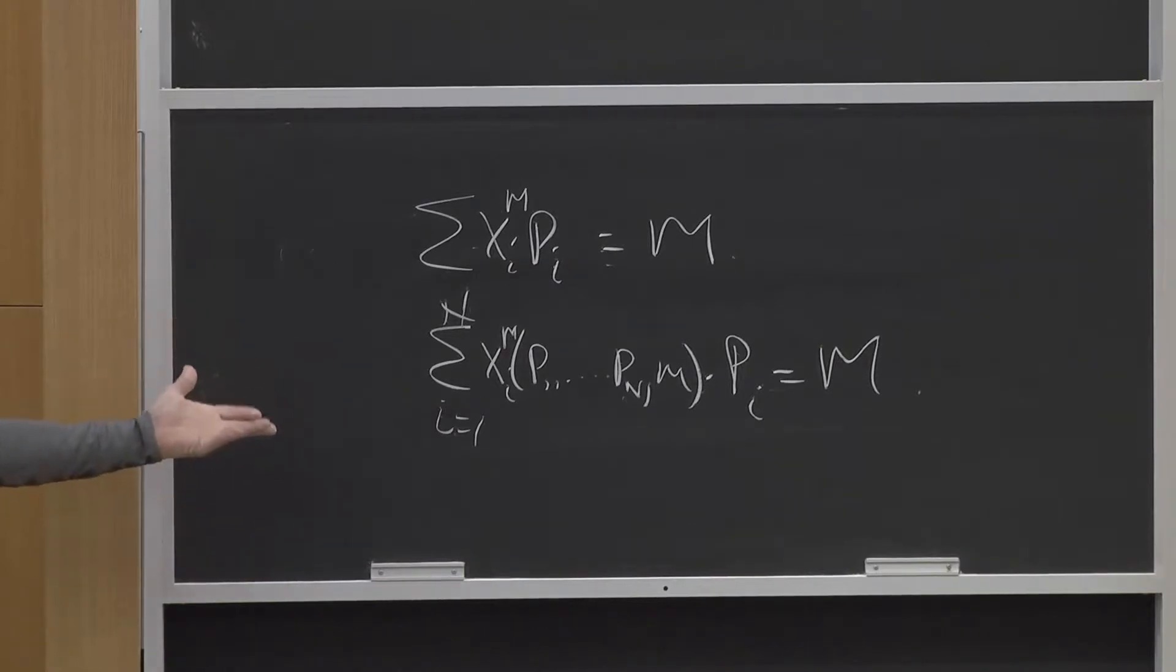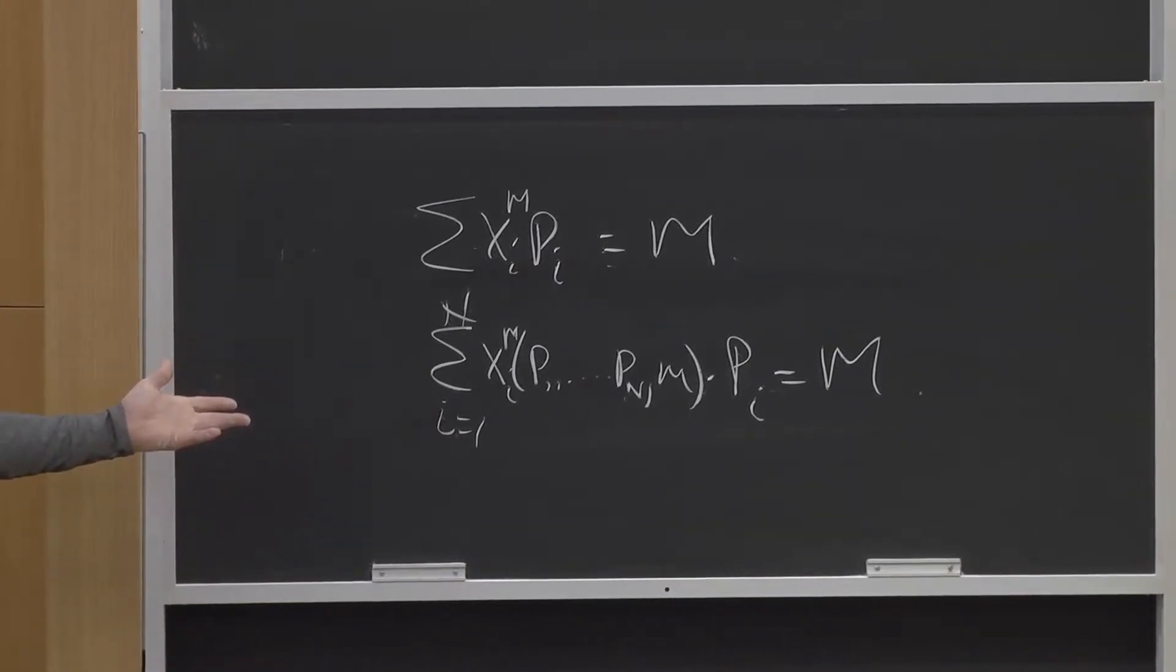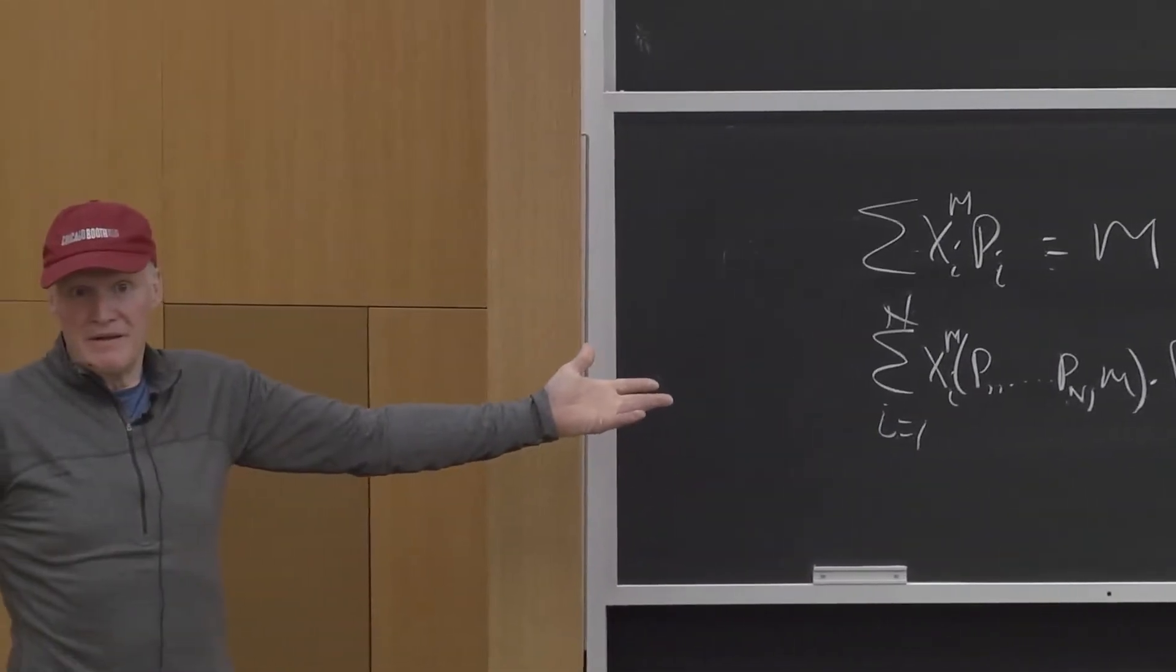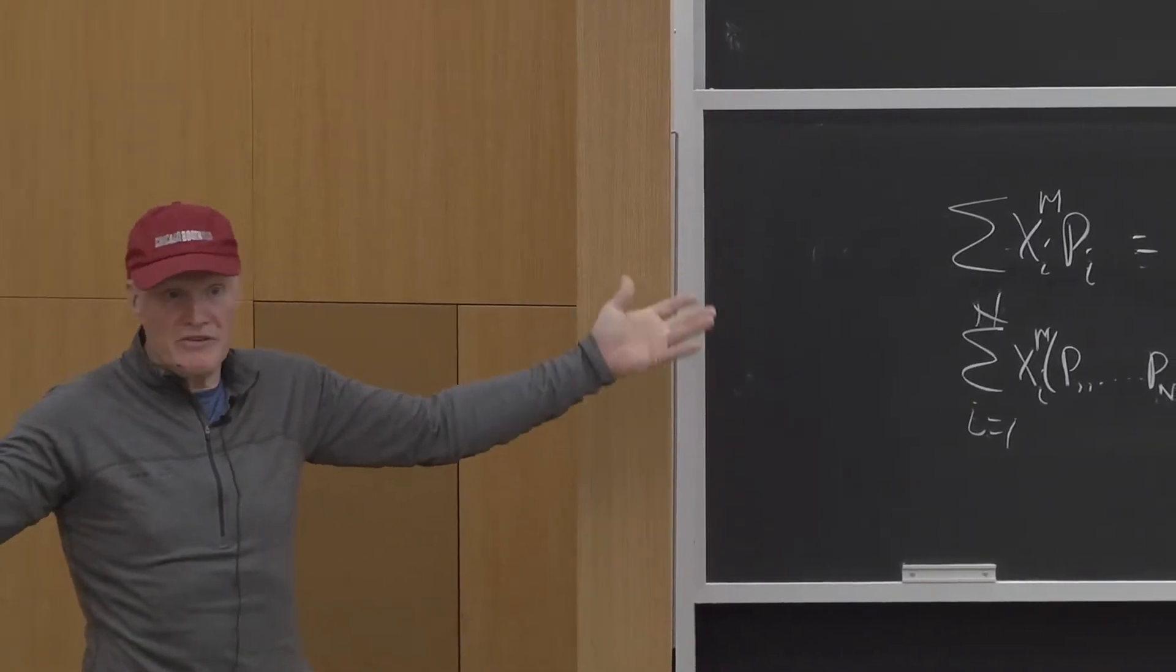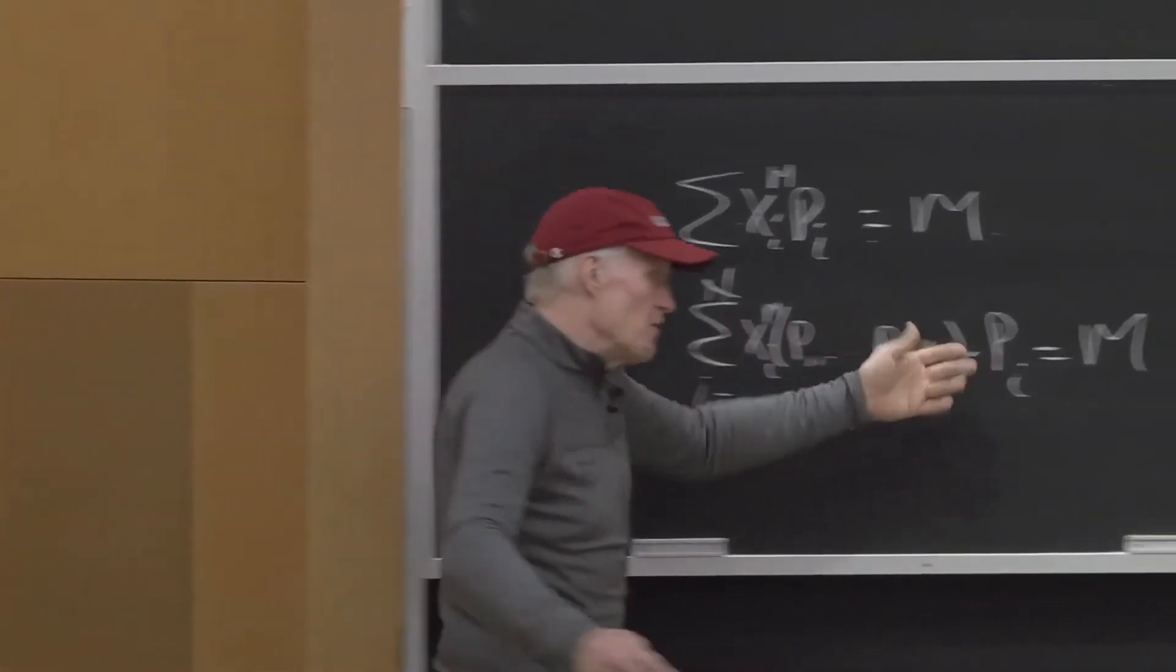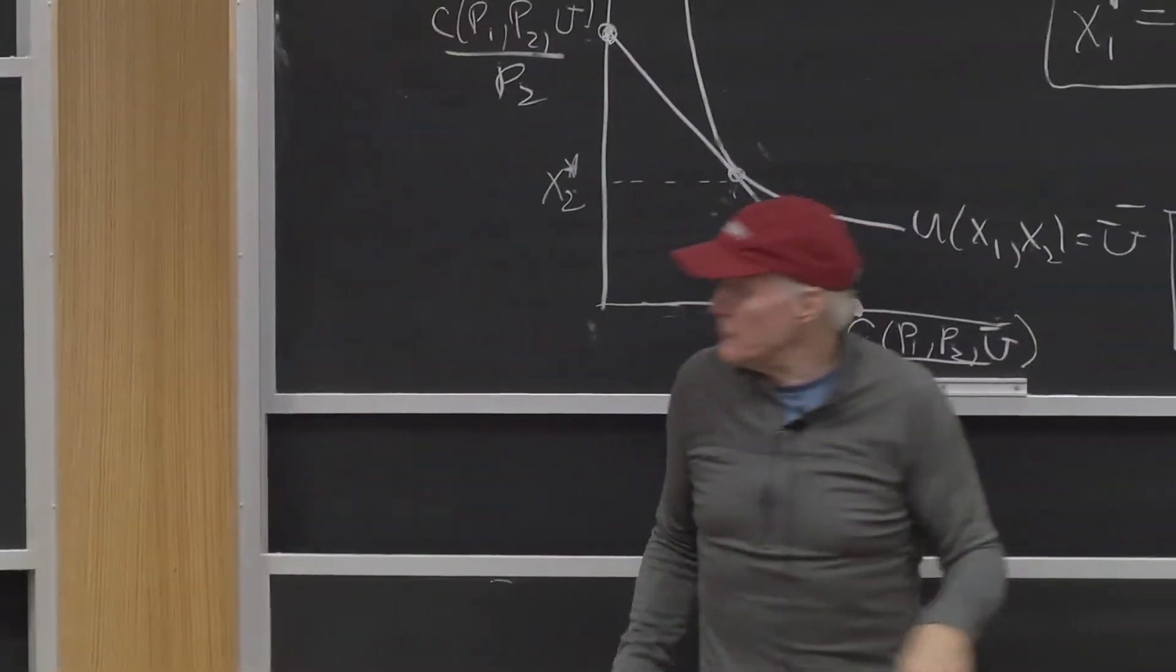Now, again, this doesn't have that much to do with rationality. It doesn't have a whole lot to do with rationality. Just says I'm spending all my income. I may spend it as crazy as anybody else, but I'm just spending all my income. I've got to satisfy that equation.